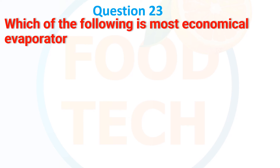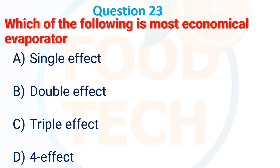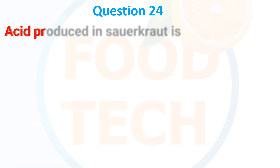Next MCQ: Which of the following is the most economical evaporator? Options: (A) Single effect, (B) Double effect, (C) Triple effect, (D) Four effect. The correct answer is D — four effect evaporator.